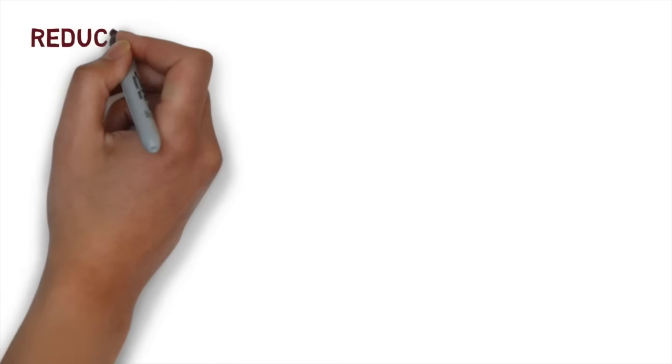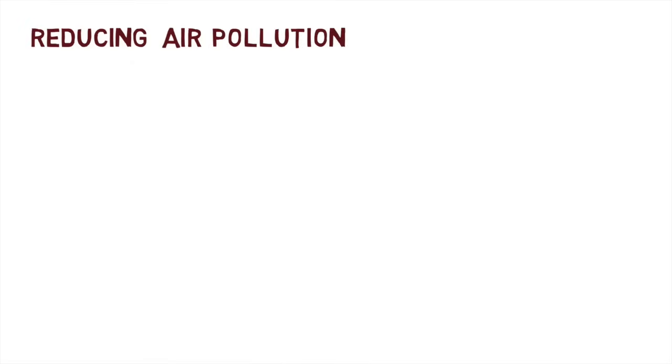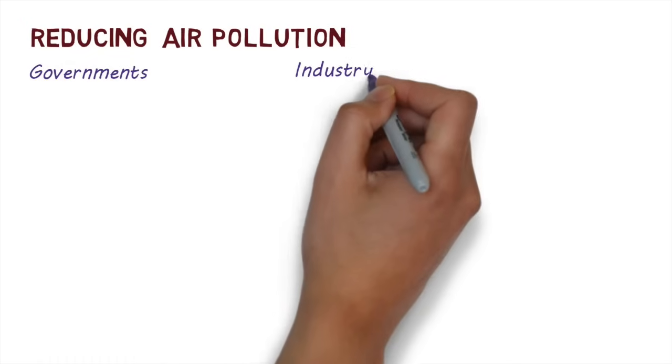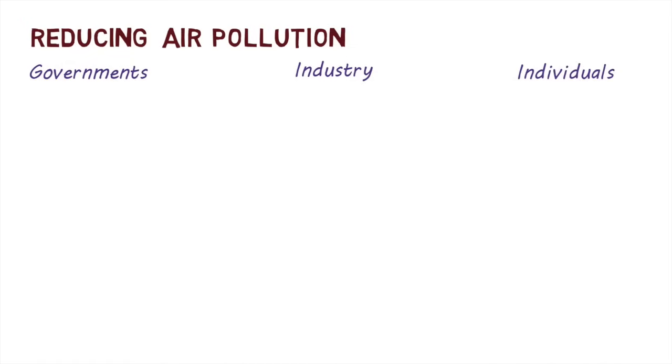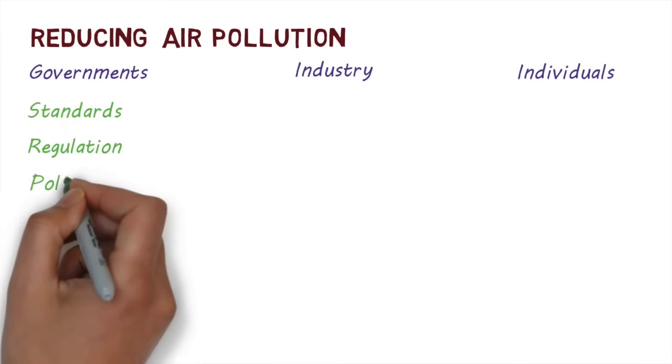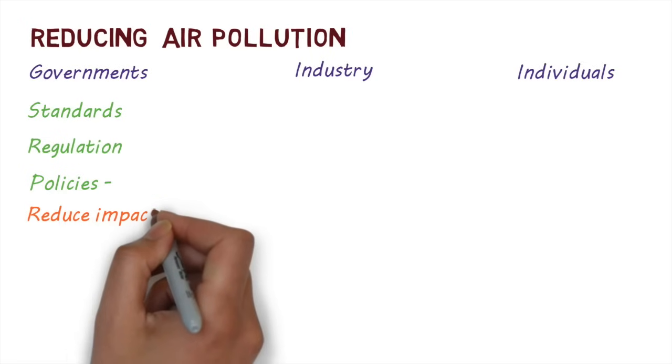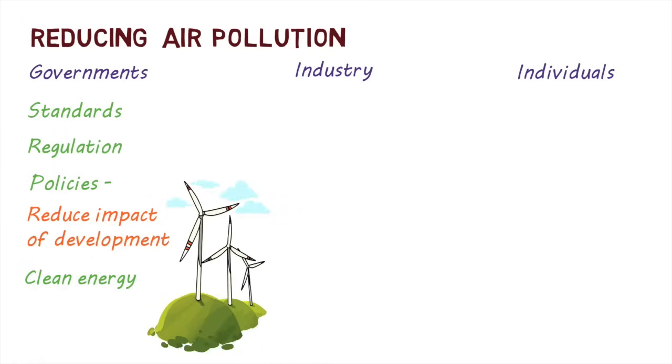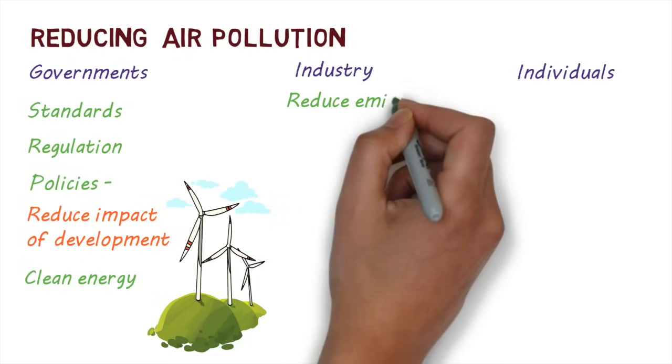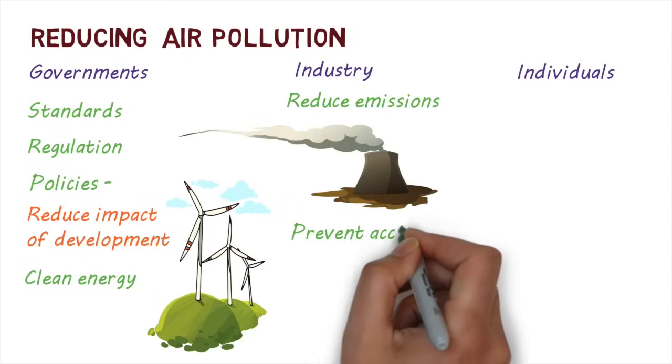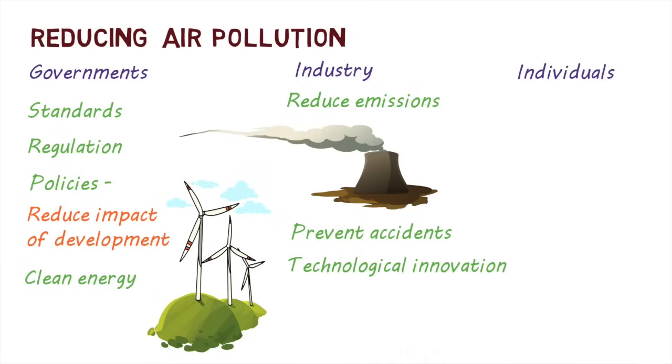What can we do to reduce air pollution? Well, there are many different ways to reduce air pollution. These require the combined efforts of governments, industry, and individuals. For example, governments can take actions like developing standards, regulating the level of pollutants in the air, developing policies to reduce environmental impact of development, and using clean energy sources. Industry can take steps like reducing their emissions to the environment, taking measures to prevent pollution accidents, or developing technology to reduce emissions, like electric cars.